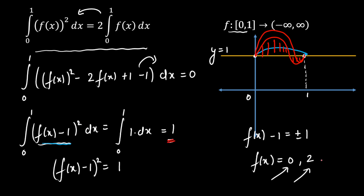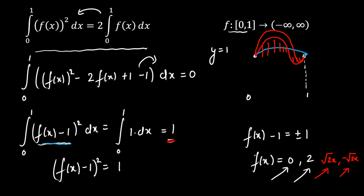Let me give one more example. If you want, you can take f(x) = √(2x), or f(x) = -√(2x), and many more functions are possible. This is just an example. So how many total functions are possible? More than 4 functions are possible here, as you can see.